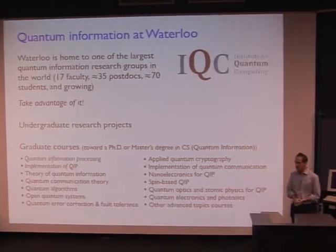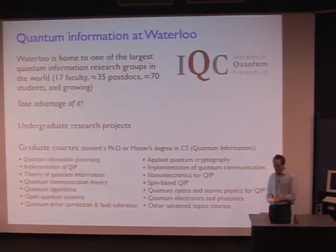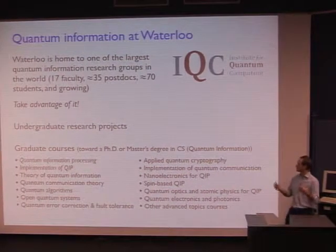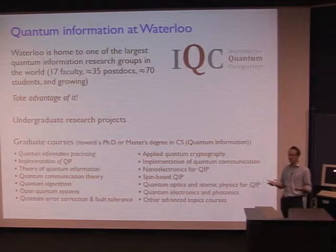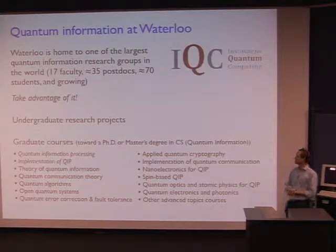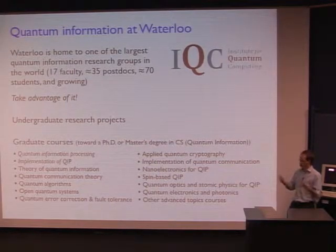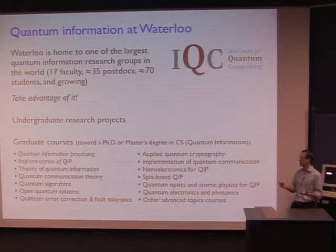So that's it for the course. I just want to mention that if you get interested in quantum information, possibly through taking this course, there are a lot of resources here at Waterloo if you want to take things further. There's something called the Institute for Quantum Computing at Waterloo, which is one of the largest — if not the largest — research centers in quantum information in the world. There's the possibility to do undergraduate research projects, and we also have a lot of graduate courses that look in more detail at things that would go beyond the material you would learn in CS467.